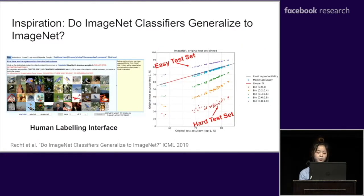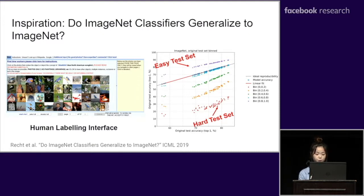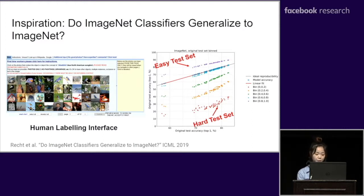An inspiring related work is 'Do ImageNet classifiers generalize to ImageNet?' Besides curating a new ImageNet test set, the authors also provide human selection frequency information — the proportion of humans who identify the true labels — for all testing images. The interface uses 50 labelers on Mechanical Turk. The plot on the right shows the authors' claim that there is correlation between easy and hard examples for humans and CNNs across different models.